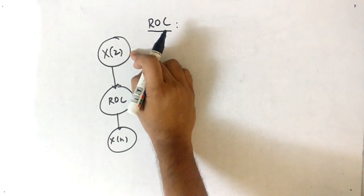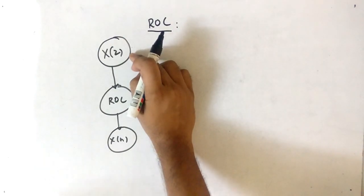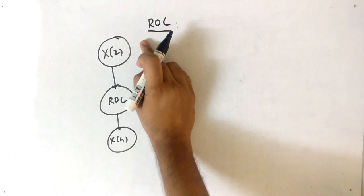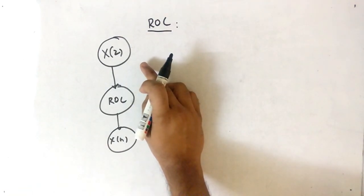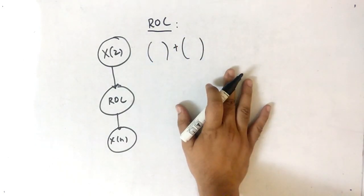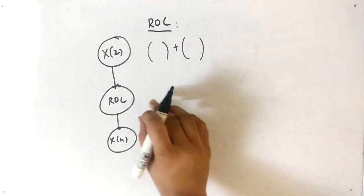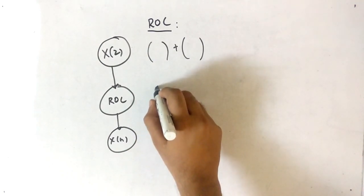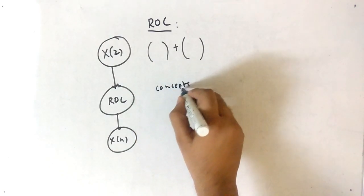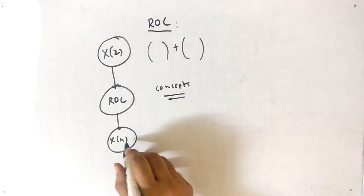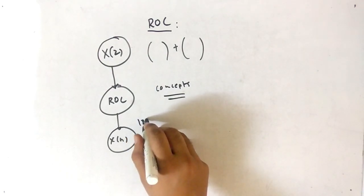To get X(z), you may need to do partial fractions as an additional step. Either X(z) is given directly or you use partial fractions to bring it into a sum form. Then you find the ROC, and finally finding x(n) means doing the inverse z-transform.